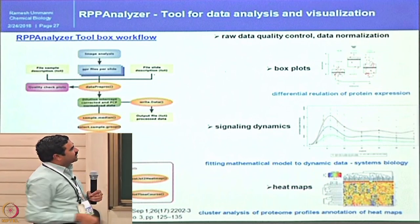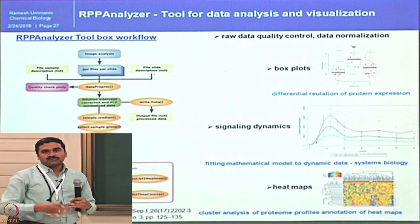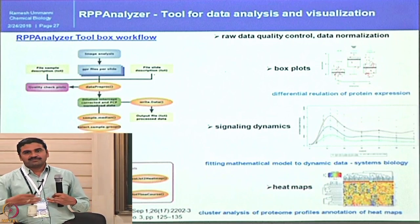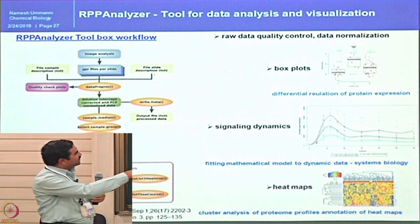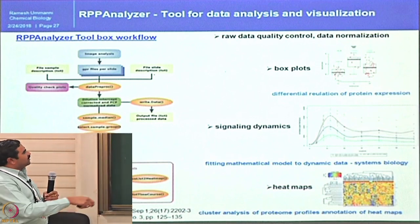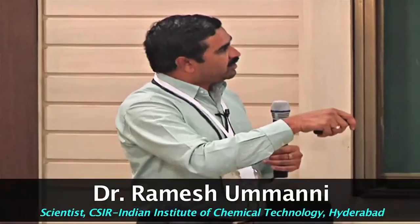Once quality control is passed, we print a pool of samples in serial dilution to confirm that the antibody detects serially diluted samples with good linearity, with R value above 0.9 — though 1 is ideal and never achieved. Then we proceed with box plot analysis, time-dependent analysis, and signaling dynamics — for example, from 0 to 10 minutes, how protein expression goes up then down. This information can be fitted into mathematical models to build network pathways tracking activation or inactivation over time. You can also draw a heat map to see clusters of proteins and their relationships.